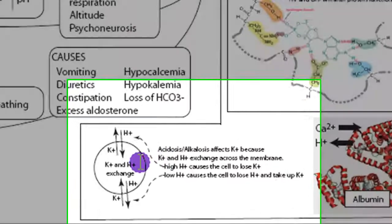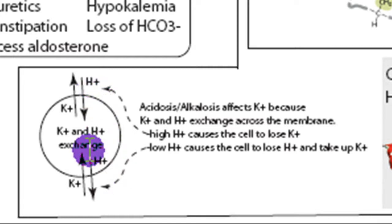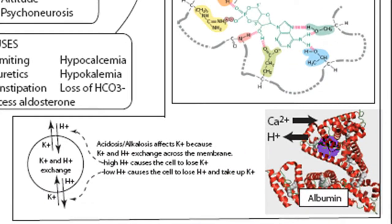Because hydrogen and potassium exchange across cell membranes, decreased acid outside the cell will cause intracellular acid to leave the cell to compensate, which causes potassium to go into the cell. Acidity also affects calcium levels because albumin, a large circulating protein with many negative charges, is balanced by hydrogen or calcium. If there's less hydrogen, more calcium binds to albumin, causing less free calcium and hypocalcemia.